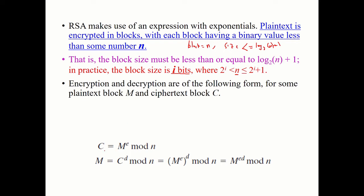The ciphertext C is calculated from the message M. The ciphertext equals M to the power E mod n, where E is a prime number and n is the modulus.